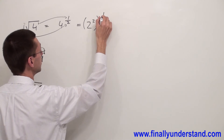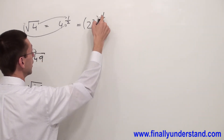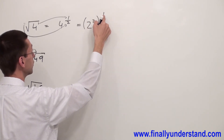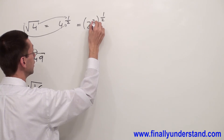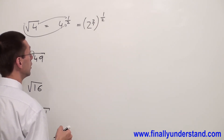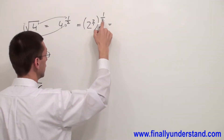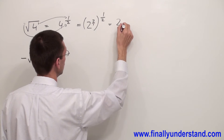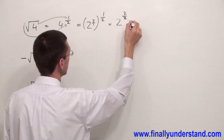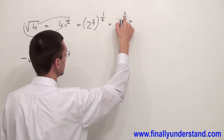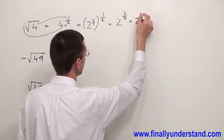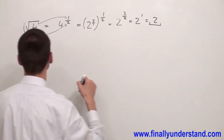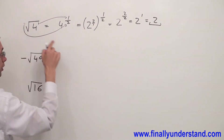And I copy down the exponent. I have an exponent outside of the parenthesis and an exponent inside of the parenthesis. Because I have a fraction outside of the parenthesis, I'm going to convert the exponent inside of the parenthesis also to a fraction. Because I have fractions, I have to multiply numerator by numerator and denominator by denominator. So I have 2 times 1 over 2 times 2 — that's 2 over 2. 2 divided by 2 is 1, so I have 2 to the first power. 2 to the first power is equal to 2. This is why square root of 4 is equal to 2.